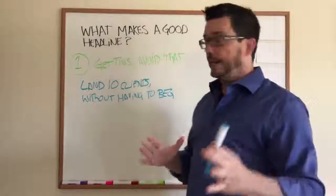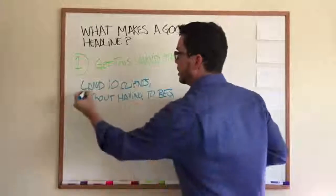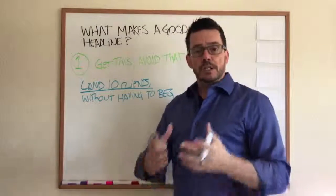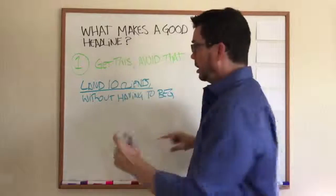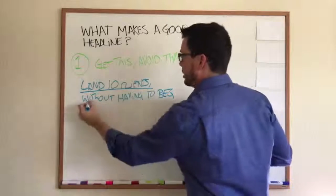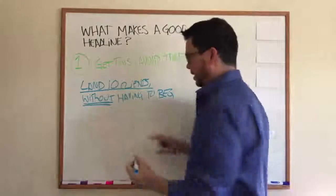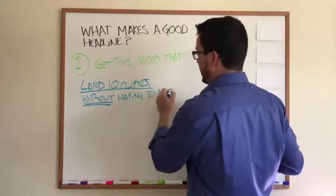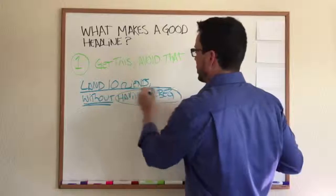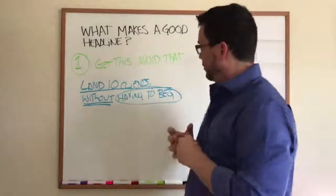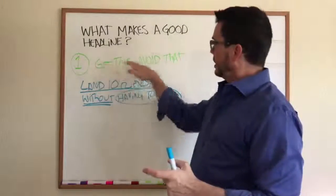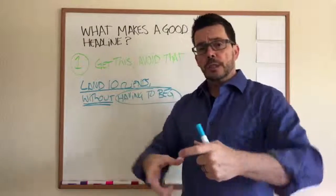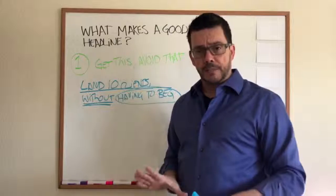But here's the thing. Here's what's important here. Get this, land clients, gives people a sense of something they want. Avoid that, without, is how you put the avoid in there, without having to beg. And this could be of course whatever you want it to be, but in this get this, avoid that, you want to give an outcome and also take a problem off of their plate.